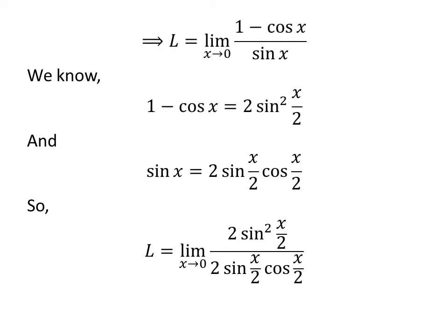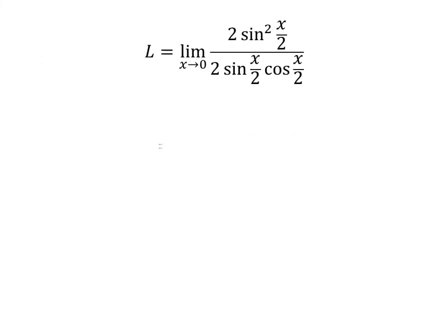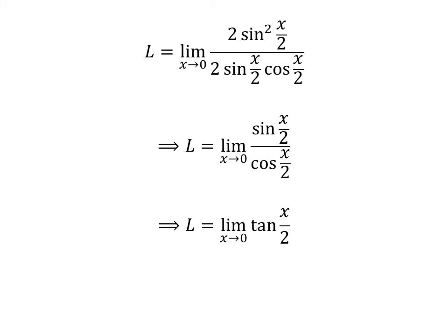Applying these two identities gives us L equal to the limit of 2 times the square of sin of half of x upon 2 times sin of half of x times cosine of half of x, as x approaches 0. Cancelling the common factor 2 times sin of half of x, and noting that sin of half of x upon cosine of half of x equals tangent of half of x, we get L equal to the limit of tangent of half of x as x approaches 0.